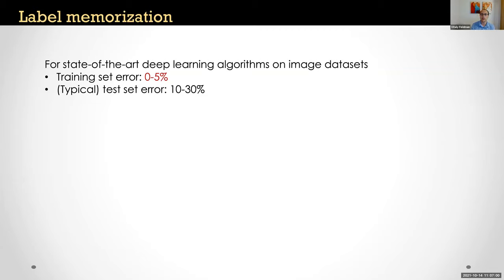The starting point of this work is the well-known observation that deep learning algorithms tend to fit the training data very well even when the test error is quite high. This was very surprising to me when I first learned about it. The reason it's surprising is that the only way for a learning algorithm to fit training data so well, even when true accuracy is relatively low, is to effectively memorize a large fraction of the training labels.